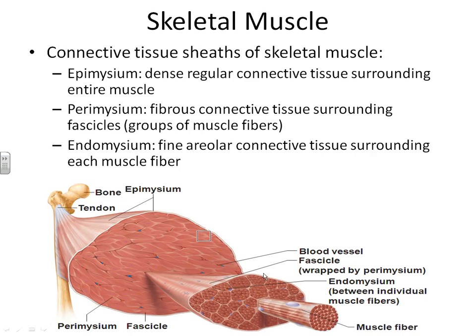All of the muscle fibers group together to form one fascicle. Each fascicle is surrounded by a fibrous connective tissue covering known as the perimysium. As we then hook all of the fascicles together, the fascicles are going to be surrounded by an outer dense regular connective tissue covering known as the epimysium. The epimysium continues to thicken, becoming dense regular connective tissue which forms the tendon. The tendon attaches the entire muscle to a bone.